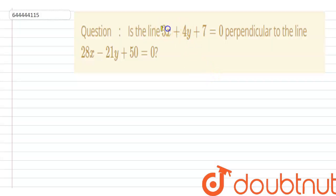In this question we have two equations of line. The first equation is 3x + 4y + 7 = 0, and the second equation is 28x - 21y + 50 = 0. So we have to tell whether these lines are perpendicular or not.